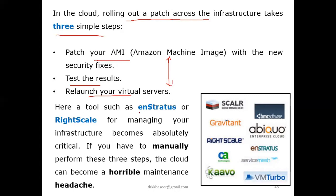Once these three steps are done, there are tools available to monitor and manage them. Among the available tools, both commercial and open source, are N-Strass and RightScale. RightScale and similar tools help manage your infrastructure and become absolutely critical. Doing these three steps manually, like we did in EC2, is a tough and painful maintenance job. Instead, you can install these tools and they will automatically handle the job very easily.